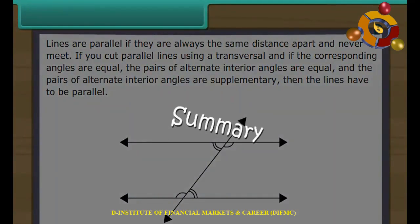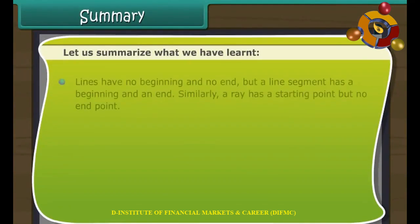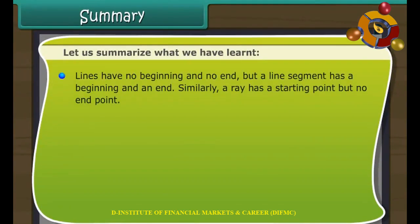Summary. Let us summarize what we have learnt. Lines have no beginning and no end, but a line segment has a beginning and an end. Similarly, a ray has a starting point but no end. An angle is created with two rays having the same starting point.